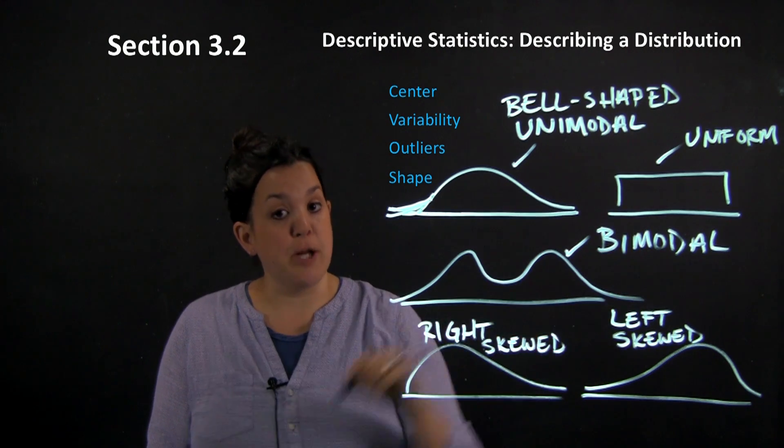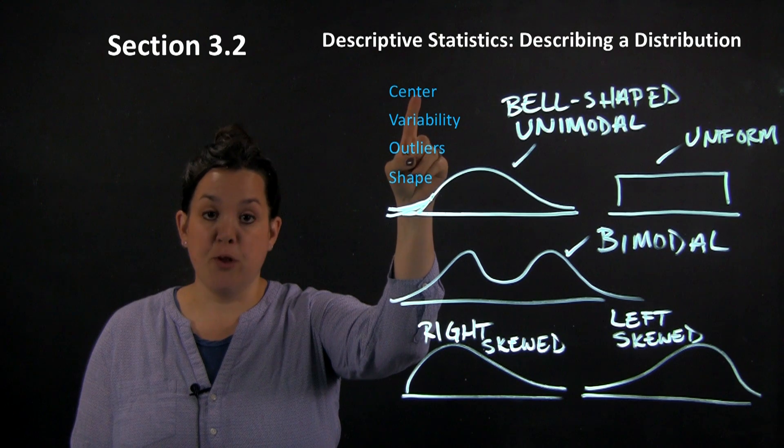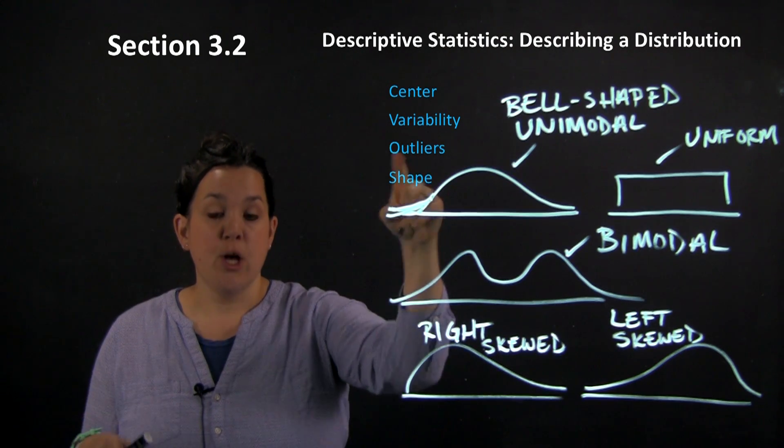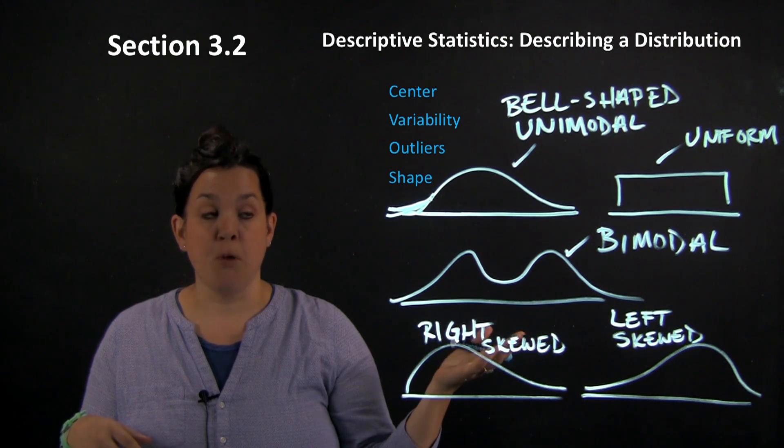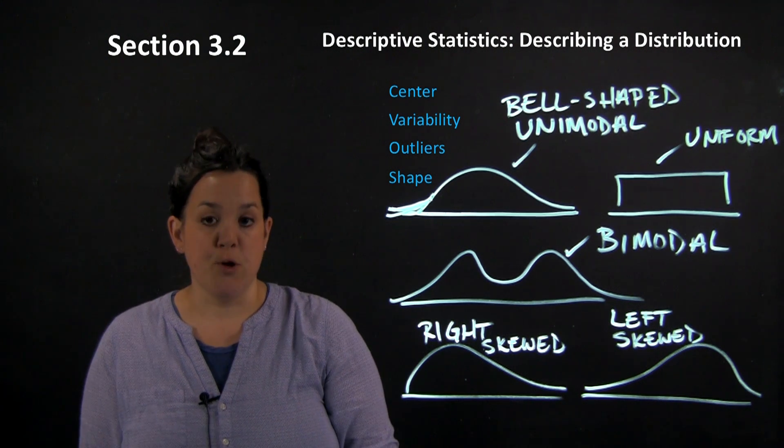So those are specific shape descriptors. When you describe a distribution, there are four areas: center, so where the data is split in half; variability, so how much spread there is; you would identify outliers, so an atypically large or atypically small value; and then shape. So when you describe shape, these are the shape descriptors that we use.